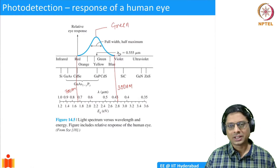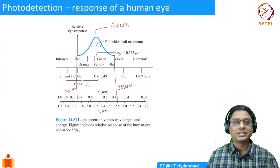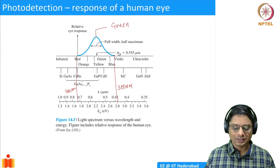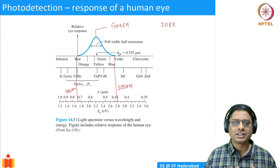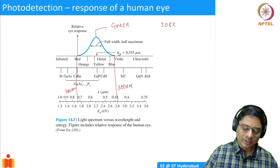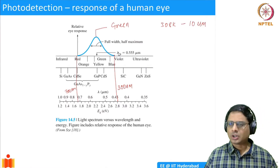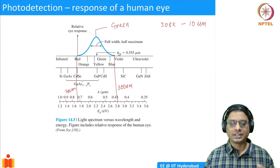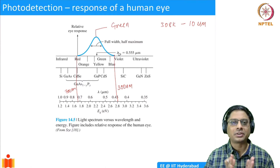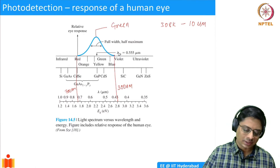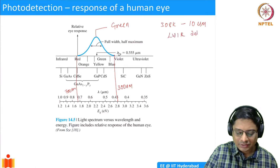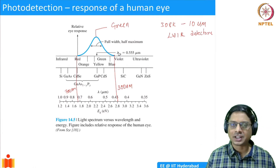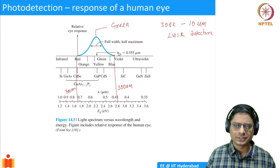Soldiers wear goggles that show images at night. How do they work? It turns out that the human body has a temperature of about 38 degrees centigrade, which translates to about 308 Kelvin. At that temperature, all of us are continuously emitting IR radiation — with a peak at about 10 microns. So if you build a photodetector that can measure this IR radiation at 10 microns, you can see in the dark. This technology is called Long Wavelength IR, or LWIR, and it enables soldiers to see in the field.